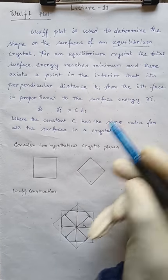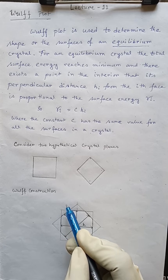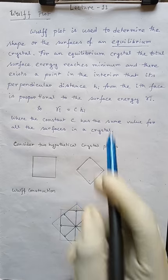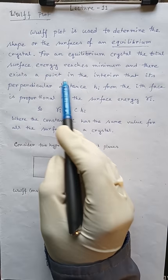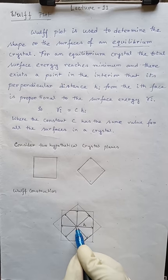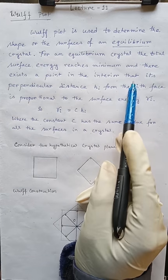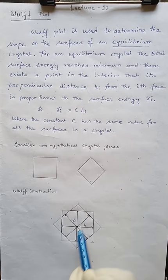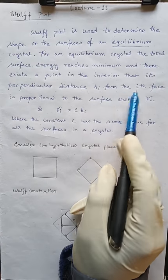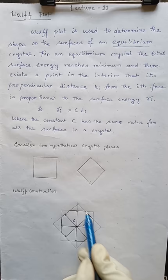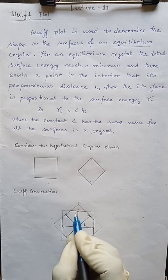Now look, this is the Wulff construction of two hypothetical crystal planes. Here it is saying that there exists a point in the interior. This one is the point. The perpendicular distance h_i, these distances are h_i from the i-th phase. This distance is h_i. You can consider it for any other phase also.